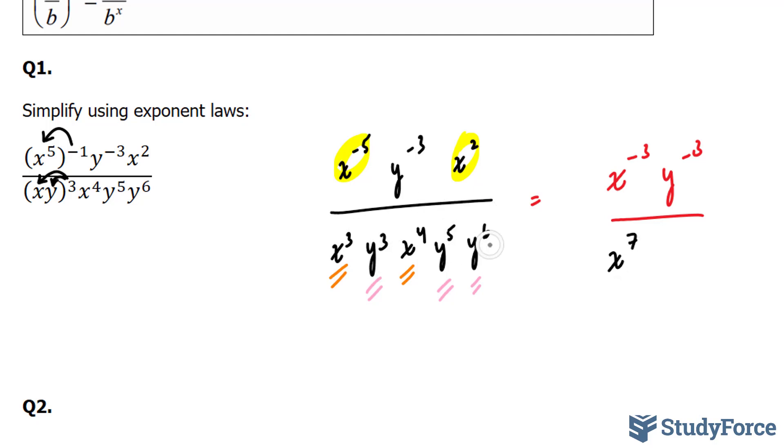And y to the power of 3, y to the power of 5, and y to the power of 6, if you add the 3, 5, and 6 together, because they are being multiplied, you end up with y to the power of 14. This looks a lot more simple than it did originally. Let's continue.